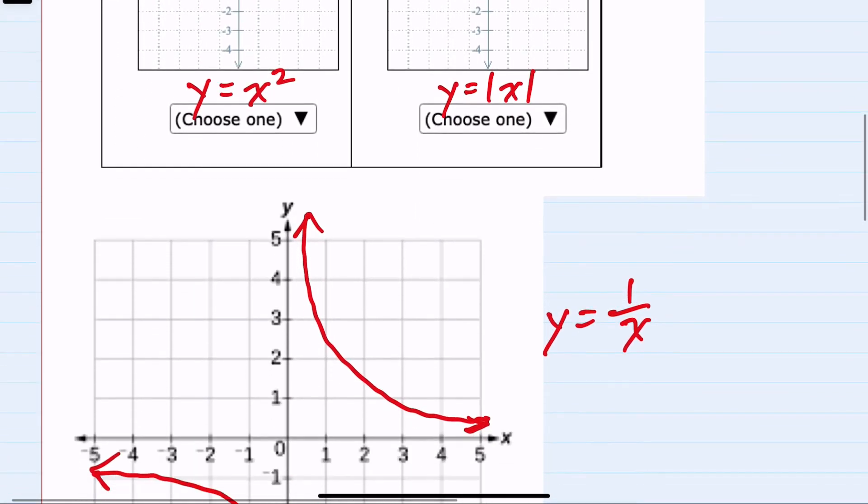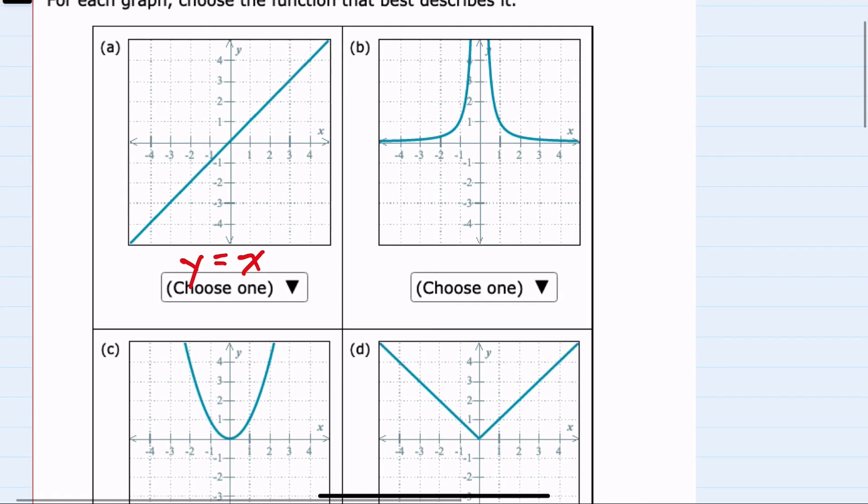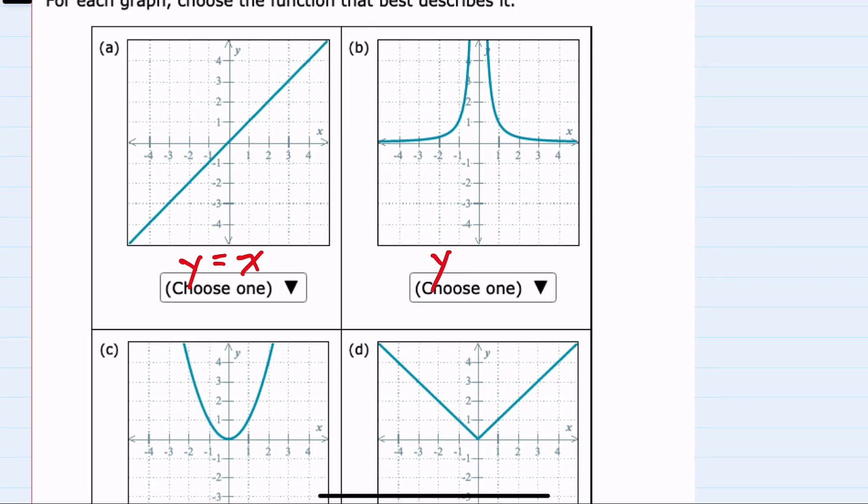We have one more parent function, and that is y equals 1 over x squared. So again, the upper right-hand corner is similar, if just maybe a bit steeper than the previous. And then since the x squared makes everything positive, the other part is also above the x-axis. And this is what we see here for b. So this parent function is y equals 1 over x squared.